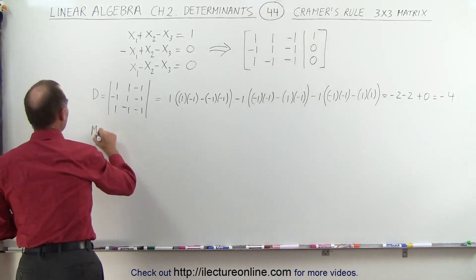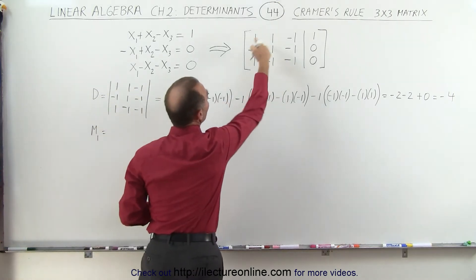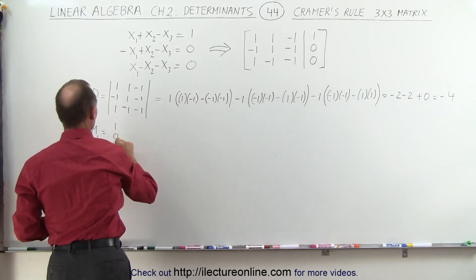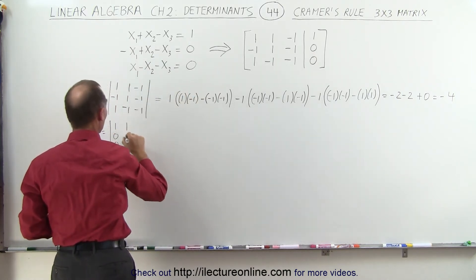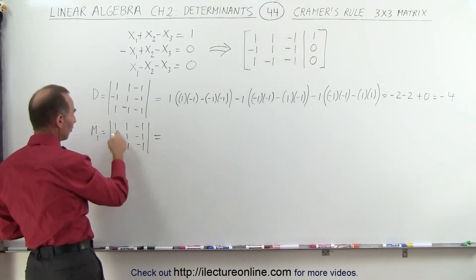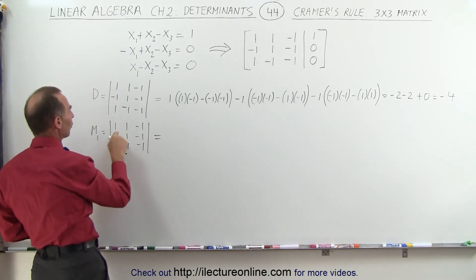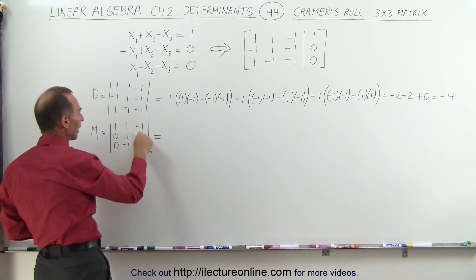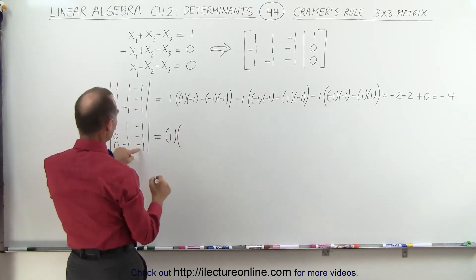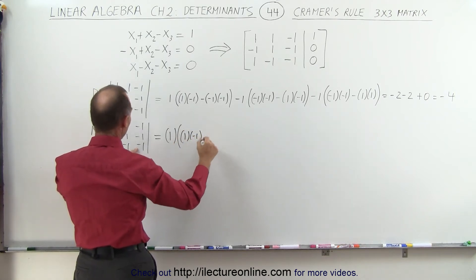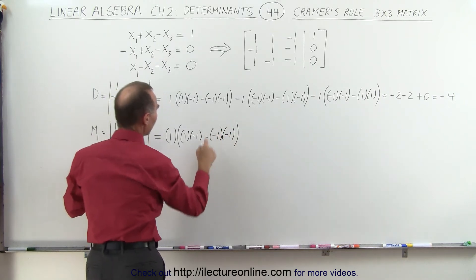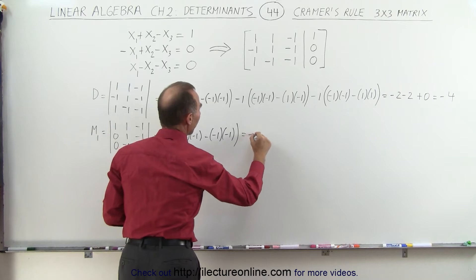Matrix M1 takes the same coefficients but with the first column replaced by the constants 1, 0, 0. So we get: 1, 0, 0 in column one; 1, 1, negative 1 in column two; negative 1, negative 1, negative 1 in column three. Since the first column has two zeros, we only need the top element: 1 times the determinant of the lower-right 2x2, which is 1 times negative 1 minus negative 1 times negative 1 — equal to negative 2.